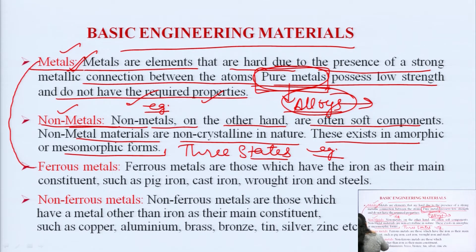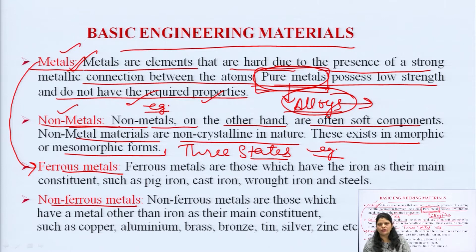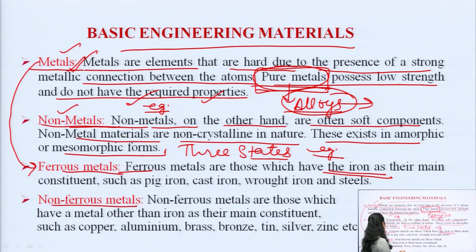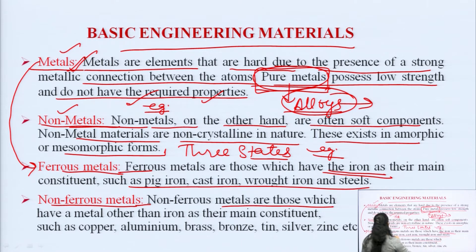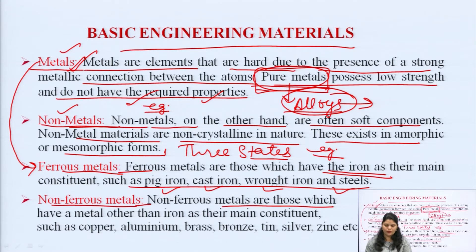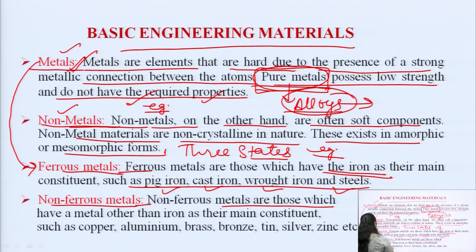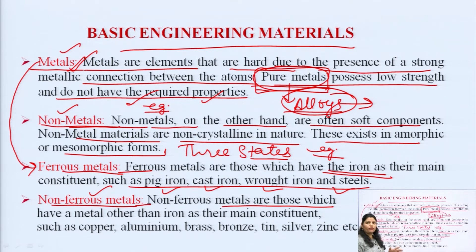We can again classify metals as ferrous and non-ferrous metals. The major difference is that in ferrous metals, iron is the main component or main element, while in non-ferrous metals the main component is something other than iron. Examples of ferrous metals are pig iron, cast iron, wrought iron, and steel. Ferrous materials have high permeability, making them suitable for construction of electrical machines. Non-ferrous metals have low permeability.